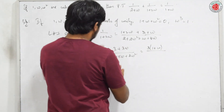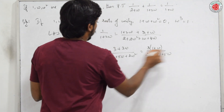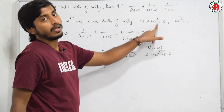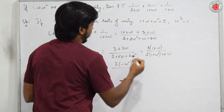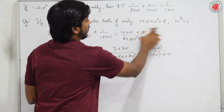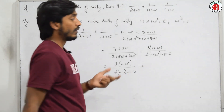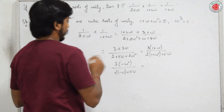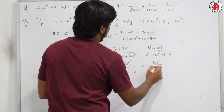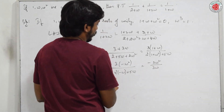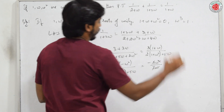Taking 3 common from the numerator gives 3(1+ω), and 2 common from the denominator gives 2(1+ω²) + 5ω. Since 1+ω = −ω², numerator = −3ω². Since 1+ω² = −ω, denominator = 2(−ω) + 5ω = 3ω. Dividing: −3ω²/3ω = −ω.